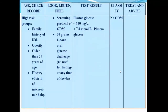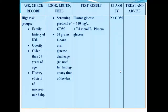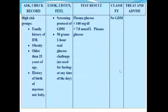Regarding screening for diabetes, we should first ask about and record risk factors such as family history of diabetes mellitus, obesity measured by height and weight, age older than 25 years, and history of birth of a macrosomic baby. The screening protocol for gestational diabetes mellitus starts with a 50-gram one-hour oral glucose challenge test.